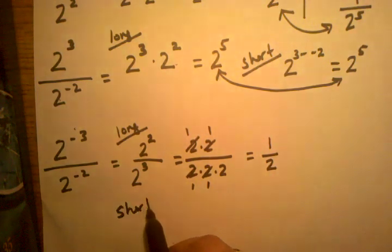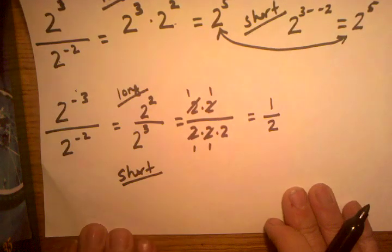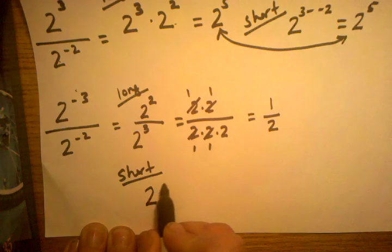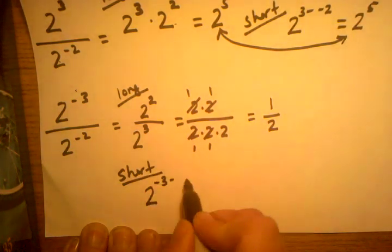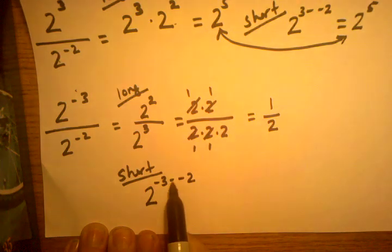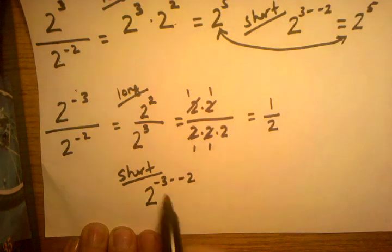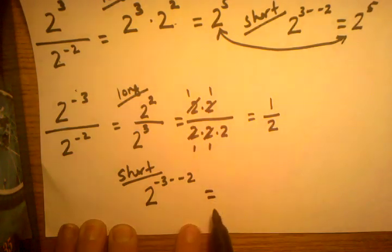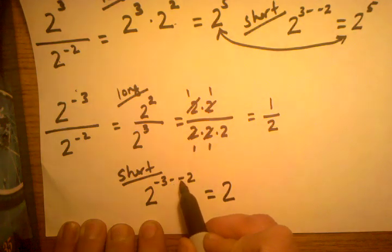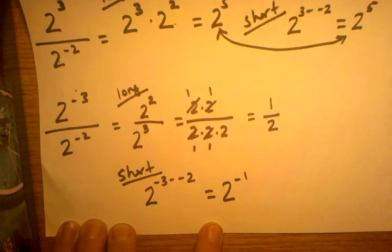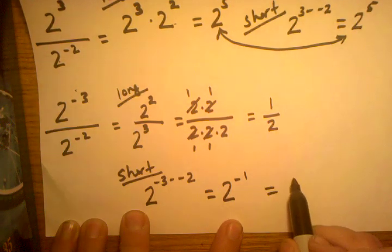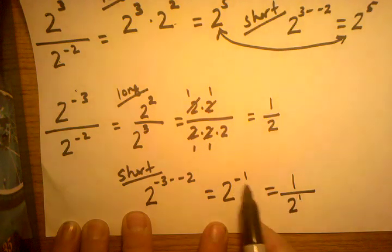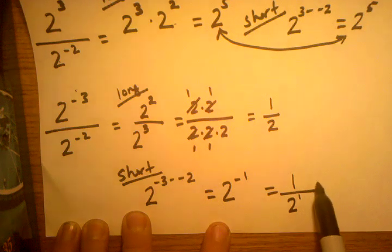Now if I do this the short way using the trick of subtracting the exponents, I write the base 2 and subtract the exponents: negative 3 minus negative 2. Notice I'm not dropping one of those negative signs — I have two negative signs next to each other, so I must be very careful. When I do negative 3 minus negative 2, I get 2 to the negative 1. And 2 to the negative 1 is the same thing as 1 over 2, which is the same answer as before.